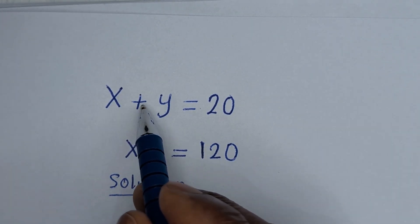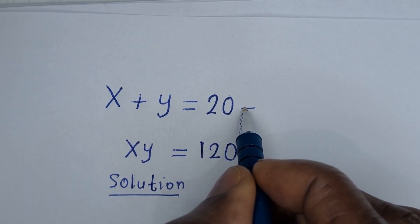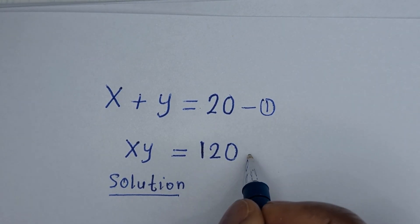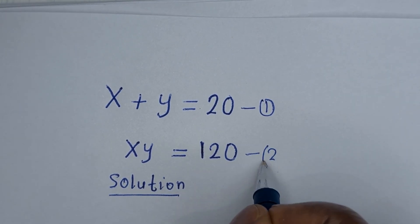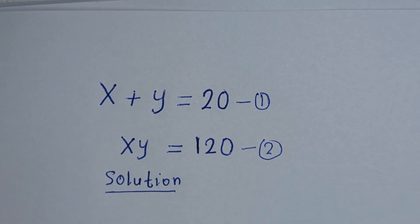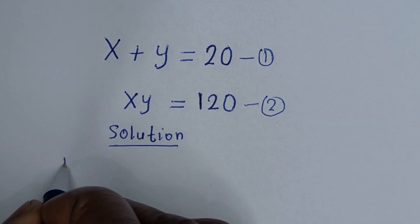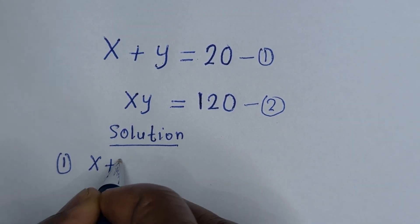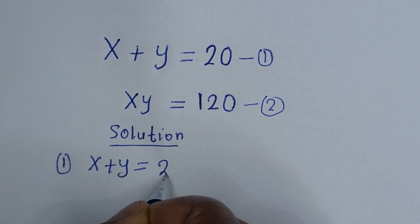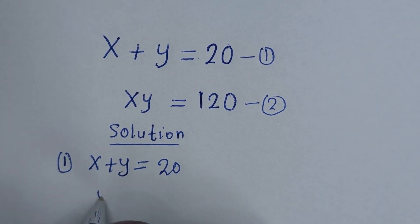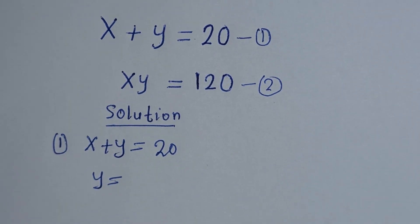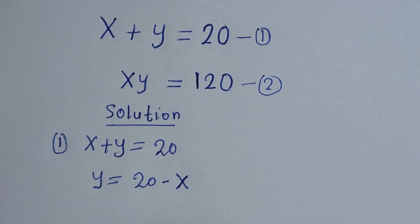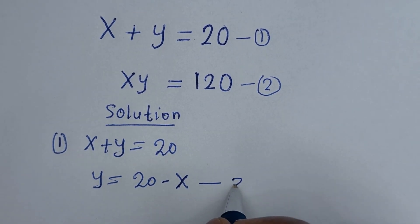From here, x plus y is equal to 20 — let us call this equation 1. xy is equal to 120 — let us call this equation 2. From equation 1, x plus y is equal to 20, so y is equal to 20 minus x — let us call this equation 3.